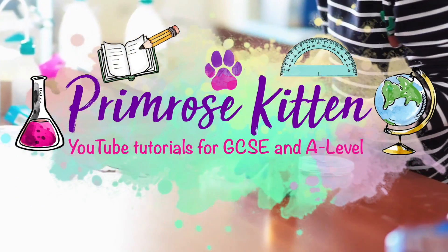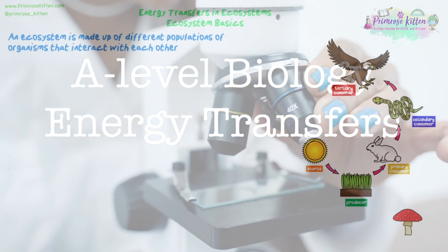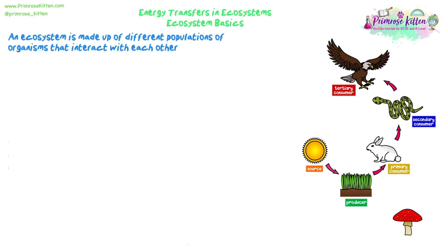In this video we're going to be looking at energy transfers within an ecosystem for your A-level. There are lots of specifics that we go into here, so take it slowly and make notes as you go. We're going to start looking at how energy gets harnessed through photosynthesis, how that travels through ecosystems, how we can measure it, and how farming can manipulate how much energy is available from different organisms.